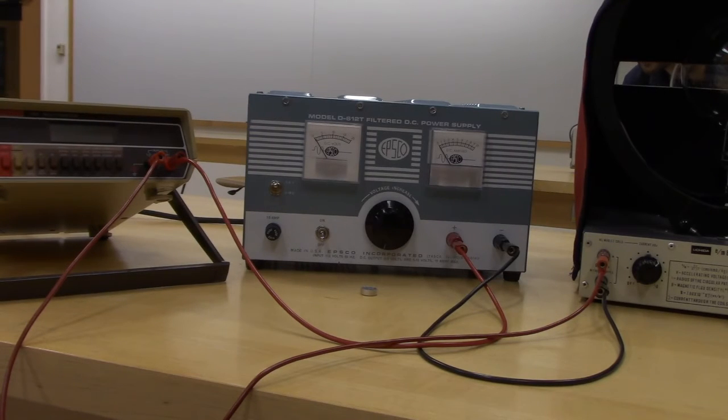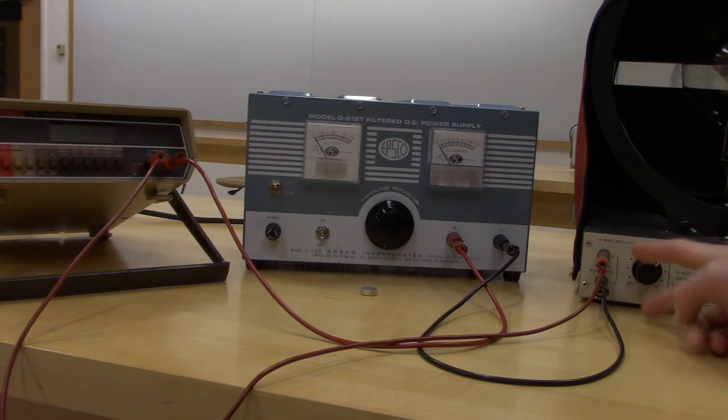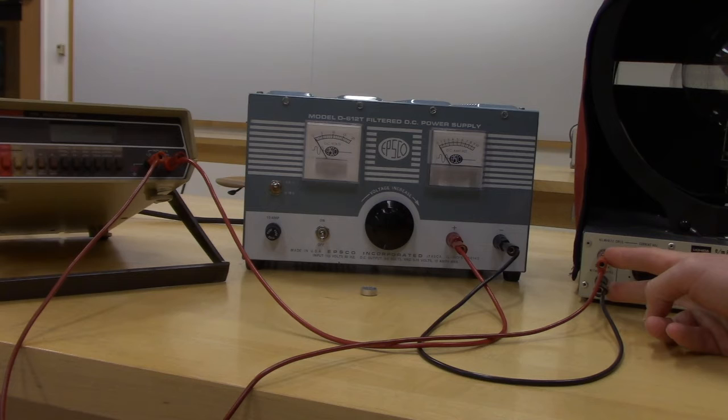Next up is the power supply for the Helmholtz coil so that we can create the magnetic field. This is where we need to produce a voltage across the coil so that we can cause a current which will create a magnetic field.